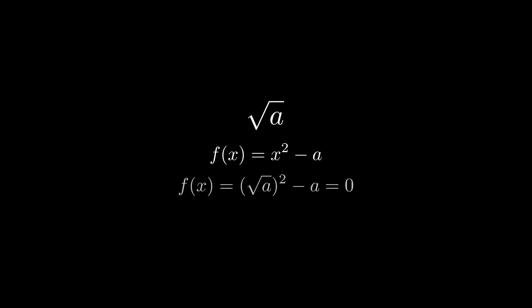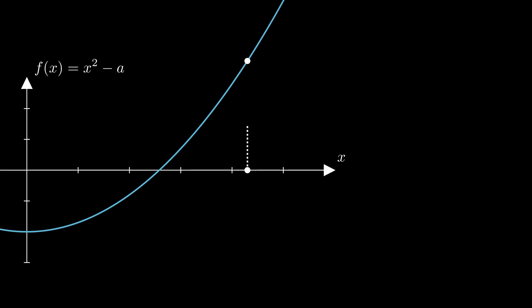Applying the Newton-Raphson method allows us to find the root of this equation. Starting with a guess value x0, we trace the tangent line to its intersection with the x-axis at x1. Can we predict x1 using just x0? Yes, we can. Let's establish a mathematical relationship between them.